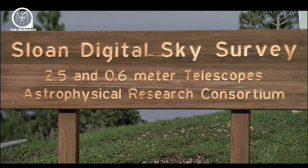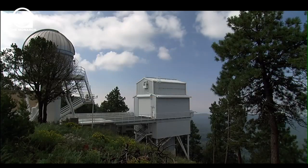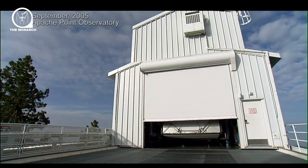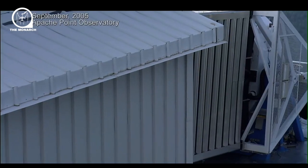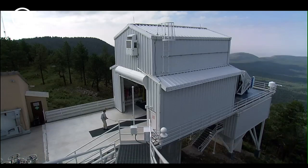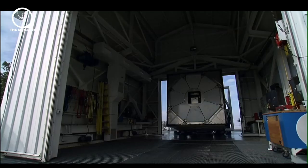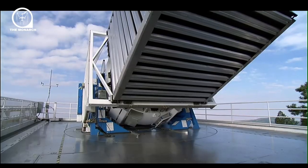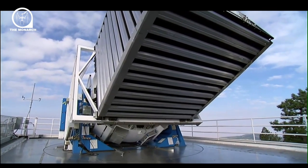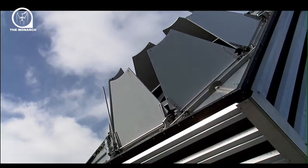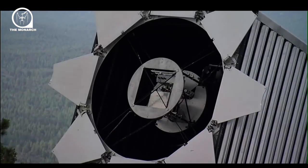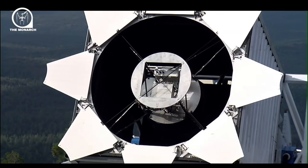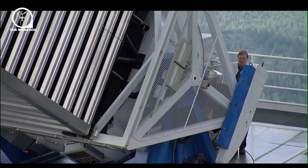The Sloan Digital Sky Survey set the standard for mass production astronomy. A series of steel plates are drilled with holes that exactly match the location of galaxies in the night sky. After plugging fiber optic sensors into the holes, the plates capture the light of hundreds of galaxies per night. From that light, astronomers calculate their distance from Earth.